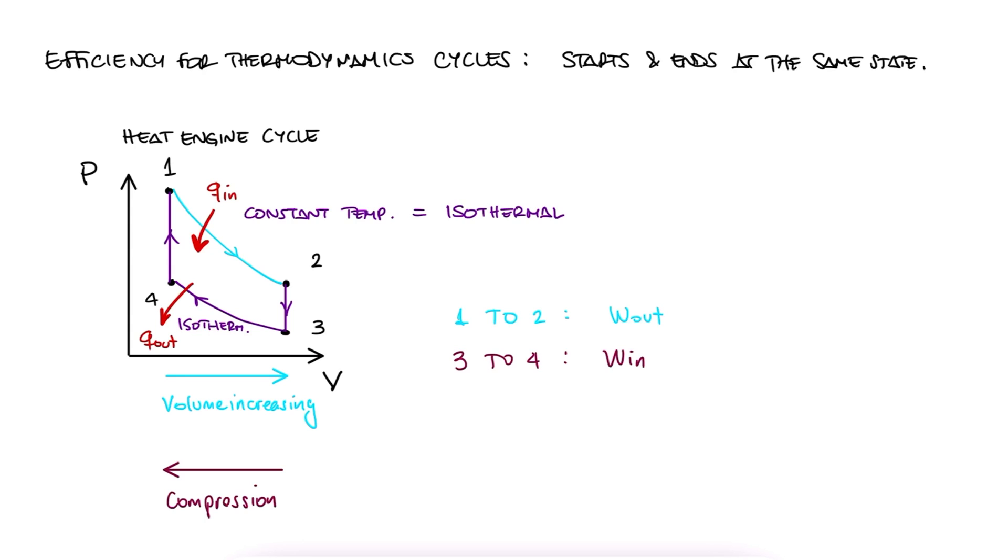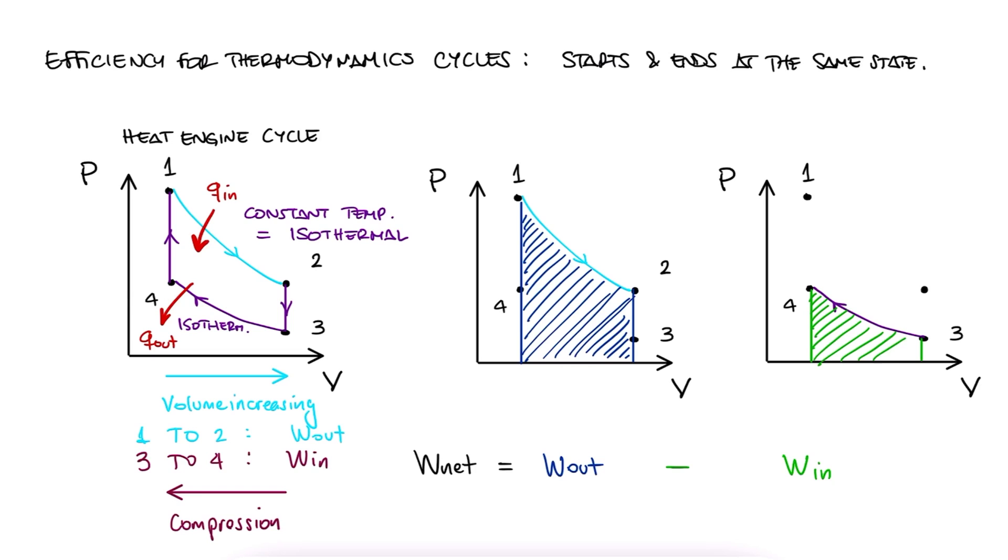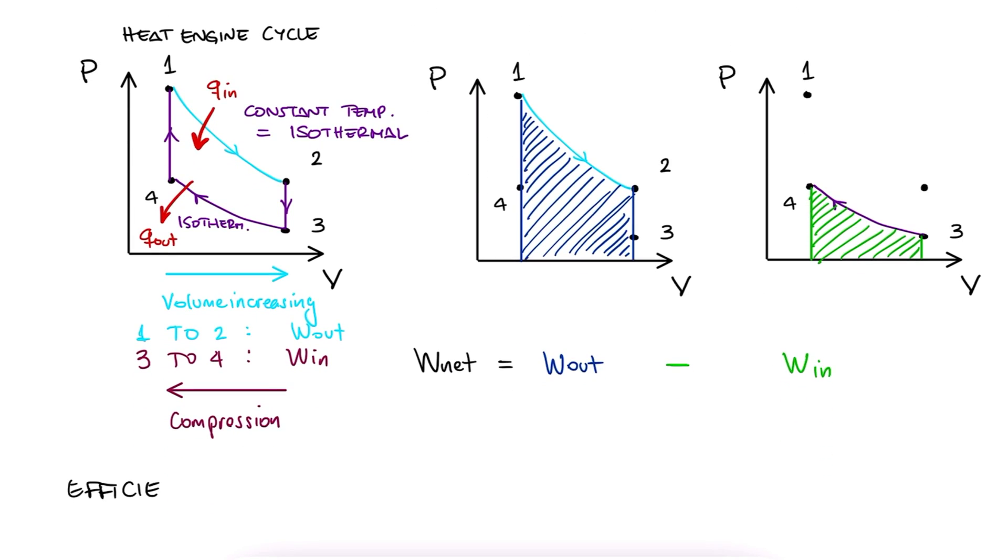So going back to our definition of work as the integral, we see that the net work coming out of the system is the difference between what is coming out, the area under the curve between 1 and 2, and the work coming in, or the area under the curve between 3 and 4. We'll dive into how to calculate these work and heat quantities later, but for now, we can define efficiency, eta, as the net output over the net input.